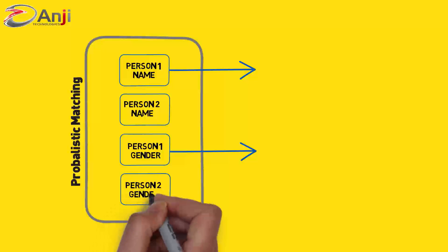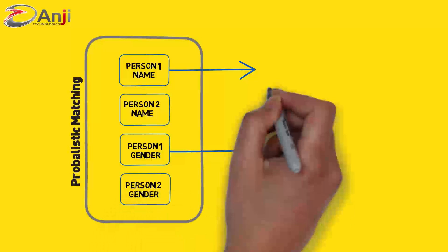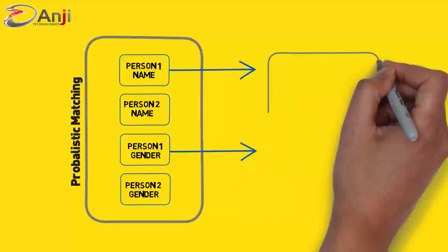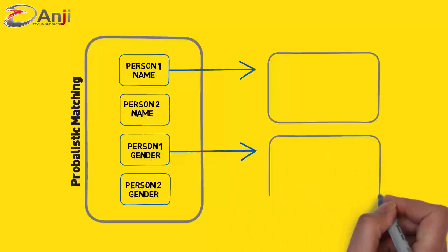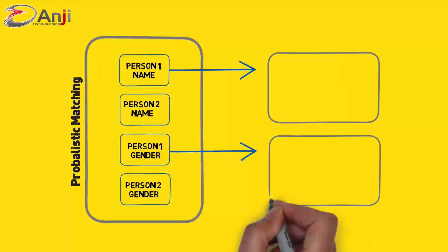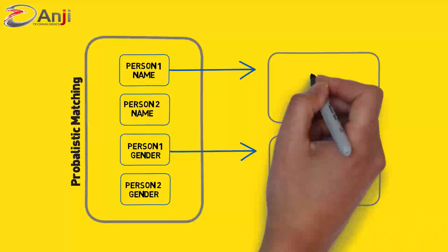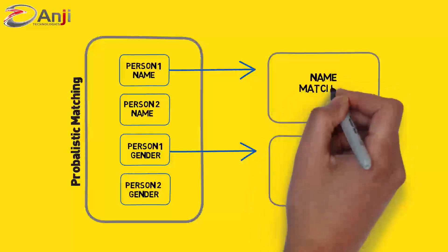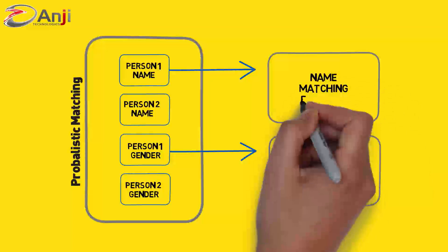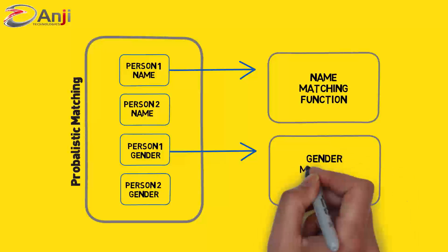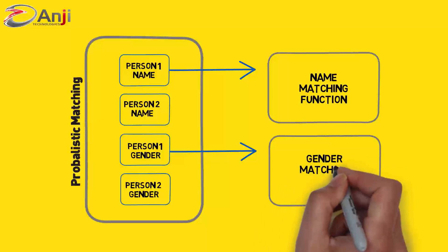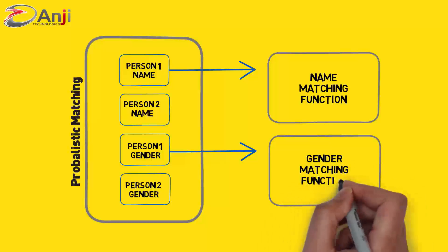Thresholds are set to determine when two records should automatically be linked since the records are the same, manually reviewed as the two records may be the same, or not linked because the two records are not the same. It is designed to work using a wider set of data elements for matching.